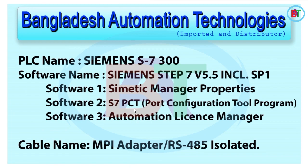Software number 2 is the PCT port configuration tool program. We have to do some work here, but if we don't install it, we can still do offline simulations. Software 3 is the Automation License Manager. We have to install all of this software in order to use the system.